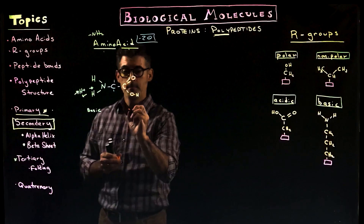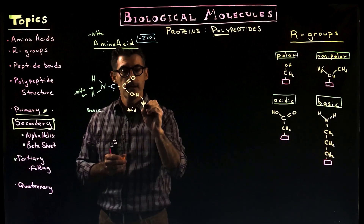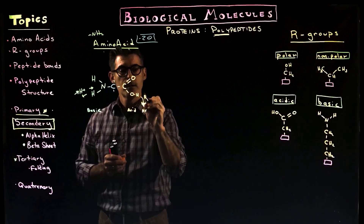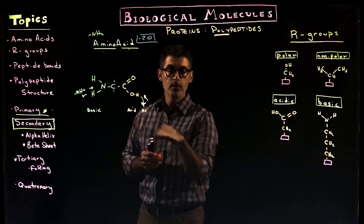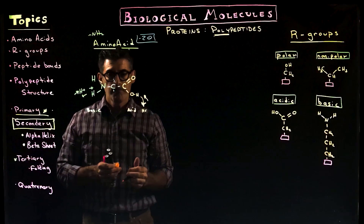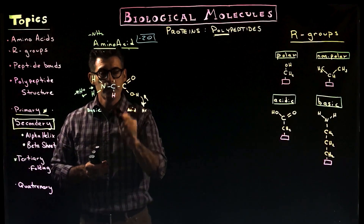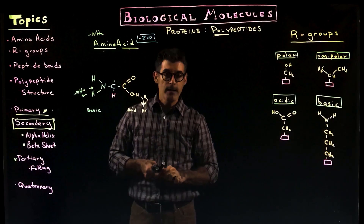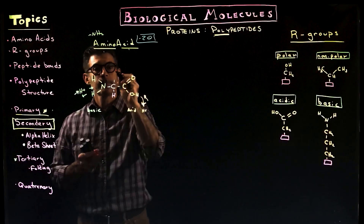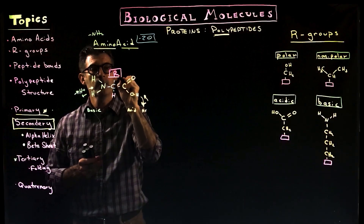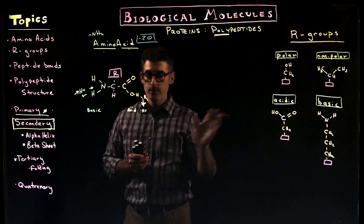This group acts as an acid because it can donate or give up hydrogen ions to solution, and that's reversible — it's a weak acid. So we could see it in a charged form with COO−. Below the central alpha carbon, we'll also typically see a hydrogen — for 19 to 20 amino acids, you'll see that. And up top is what's called the R group, which is what makes each amino acid unique.